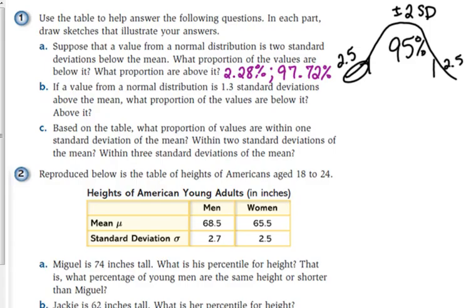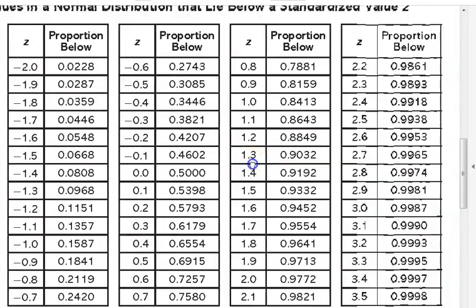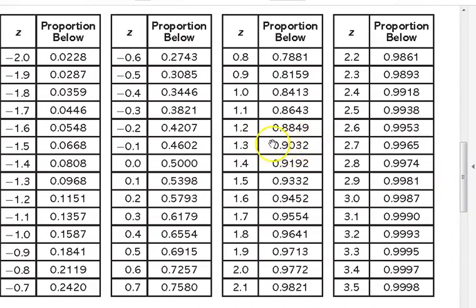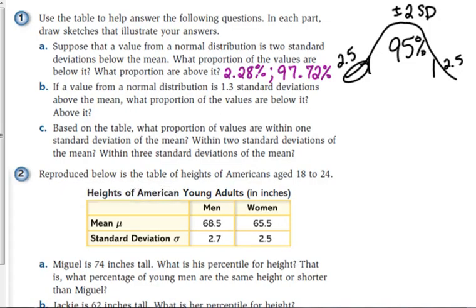If the value from a normal distribution is 1.3 standard deviations above the mean, what proportion of the values are below it and above it. Again, looking at the table, this is above the mean, so we're looking for positive 1.3. And we look for its value on our table, and that is 90.32. 90.32 are below it, meaning we've got 9.68 above it, and we make 100%.